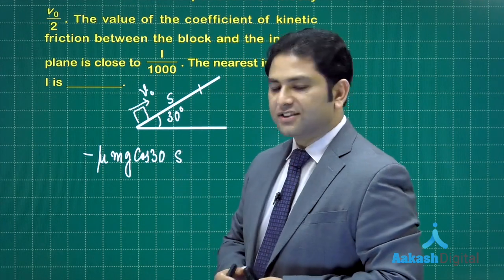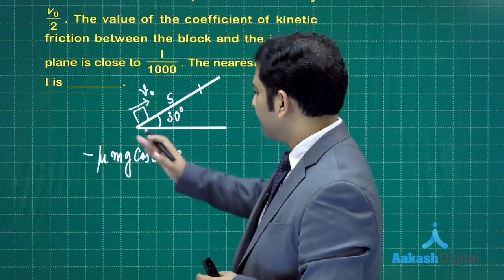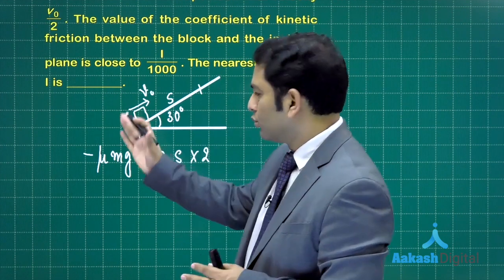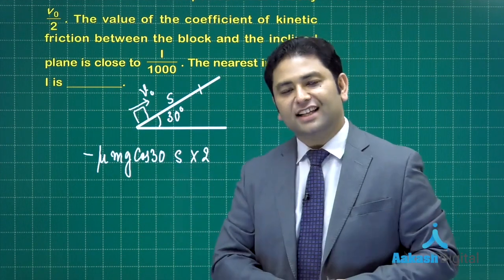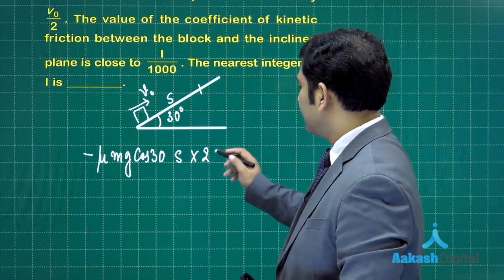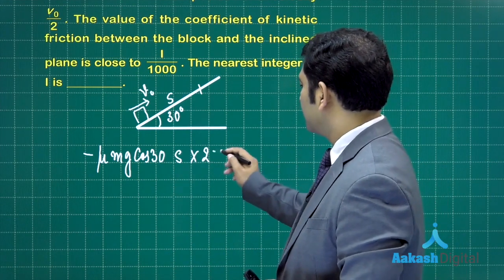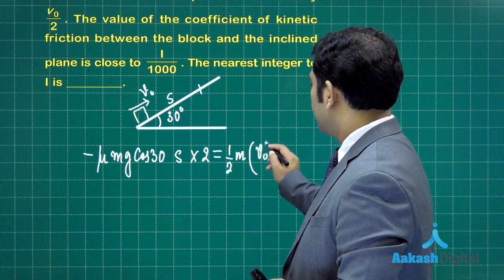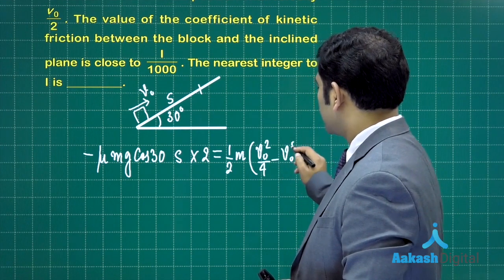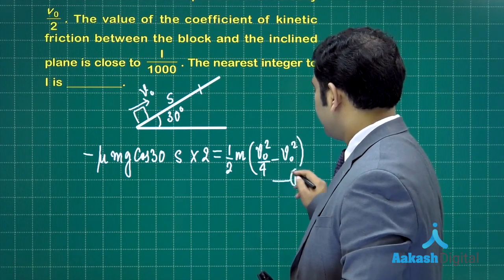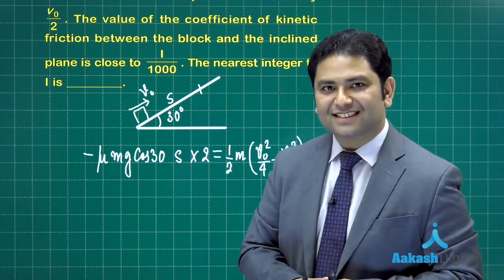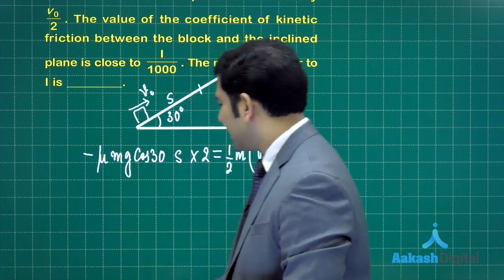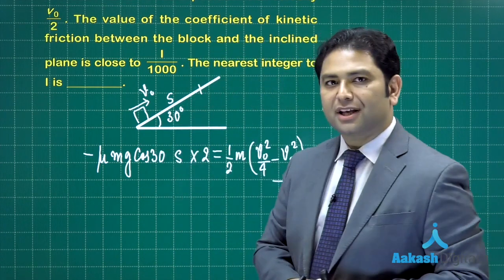The work done by friction is minus mu m g cos 30 times s, that's the distance in the ascent, multiplied by 2. The same work would be done by friction in both cases. Work done by friction equals change in kinetic energy: one half m v0 square by 4 minus v0 square. The trouble is this equation has s, and s has to be eliminated.